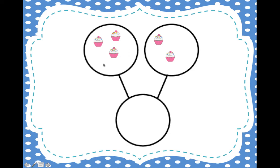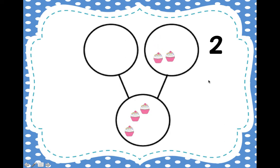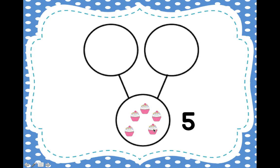Over here we have how many cupcakes? One, two, three. Over here we have how many cupcakes? One, two. I'm going to start putting my cupcakes down here in the circle on the bottom. So there's one, two, three. And then let's move these ones on this side — one, two. How many cupcakes do we have all together on the bottom? One, two, three, four, five. Now there's five cupcakes.